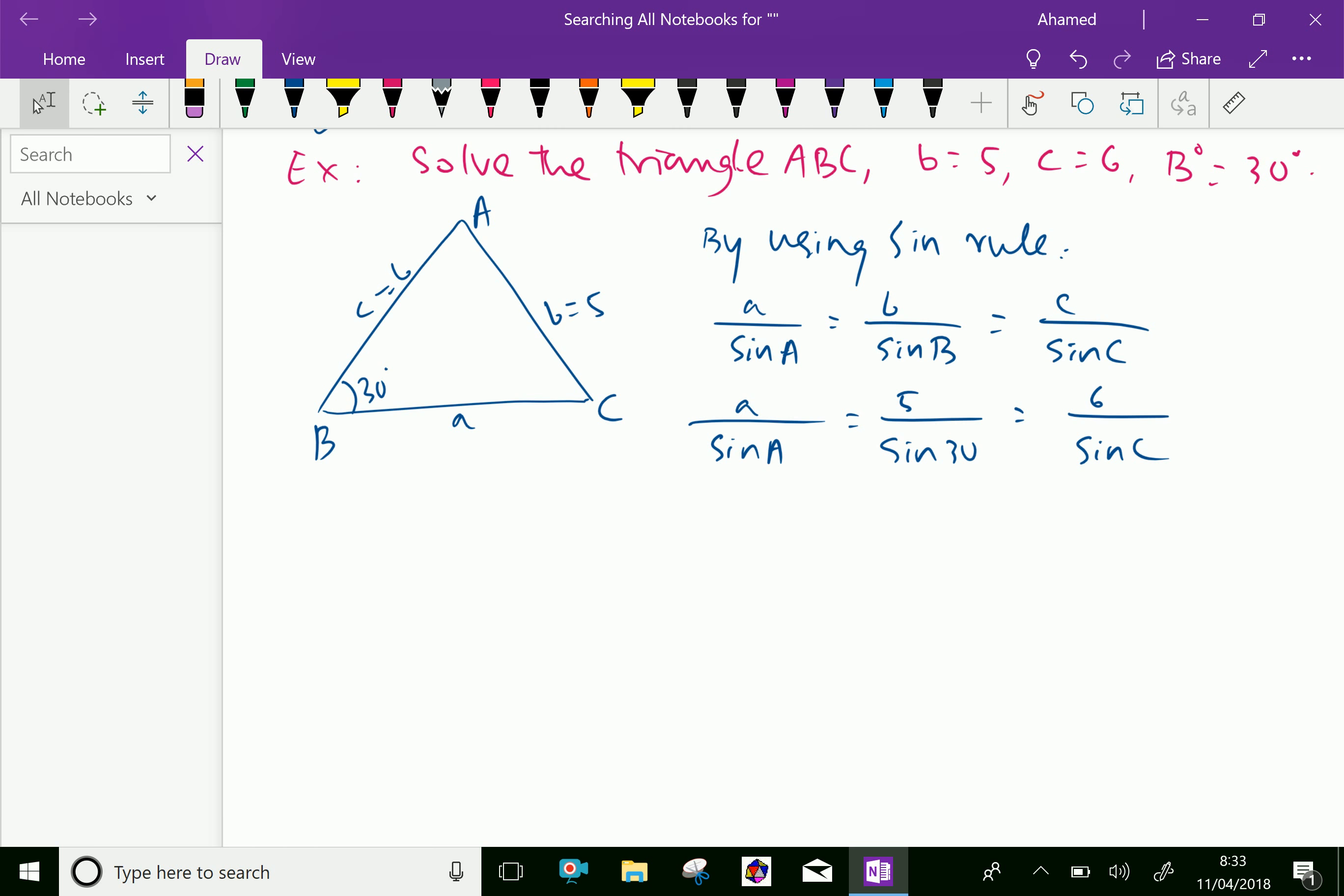Now, we will take first two terms. A over sine A equals 5 over sine 30, which is 0.5.